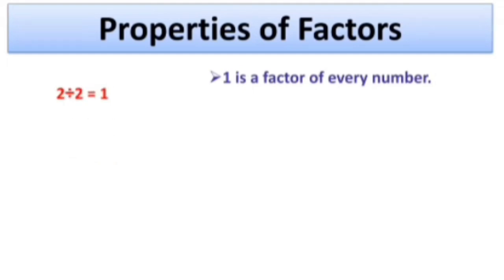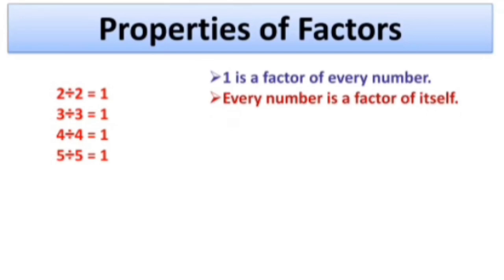2 divided by 2 gives 1. 3 divided by 3 gives 1. 4 divided by 4 gives 1. And 5 divided by 5 equals 1. That means when you divide any number by itself you get 1 as an answer. From that we can say every number is a factor of itself because that number divides it exactly without any remainder.